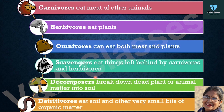Scavengers eat things left behind by carnivores and herbivores. Decomposers break down dead plant or animal matter into soil.